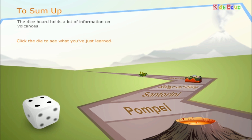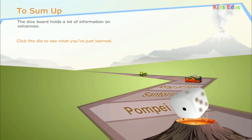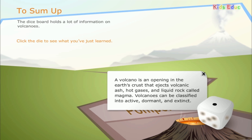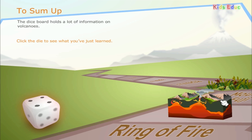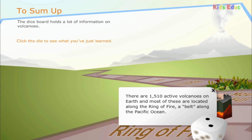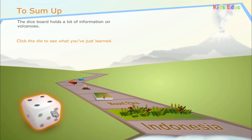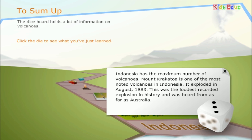A volcano is an opening in the Earth's crust that ejects volcanic ash, hot gases, and liquid rock called magma. Volcanoes can be classified into active, dormant, and extinct. There are 1,510 active volcanoes on Earth, and most are located along the Ring of Fire, a belt along the Pacific Ocean. Indonesia has the maximum number of volcanoes. Mount Krakatoa is one of the most noted volcanoes in Indonesia — it exploded in August 1883, and this was the loudest recorded explosion in history, heard from as far away as Australia.